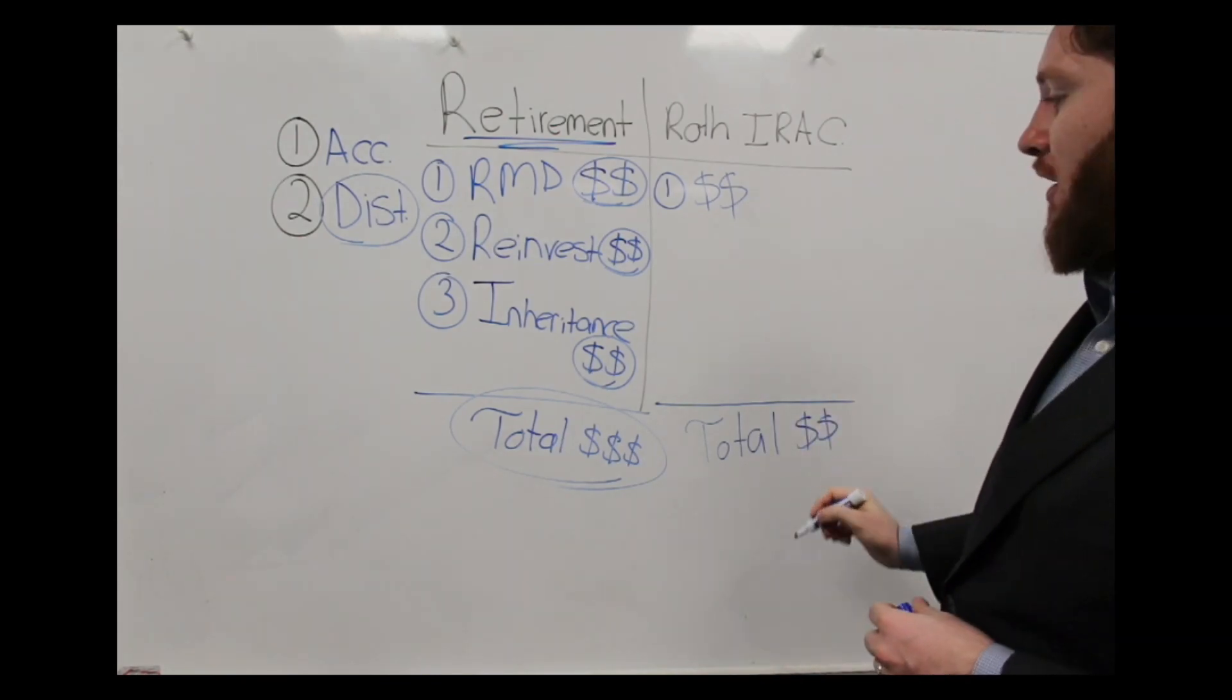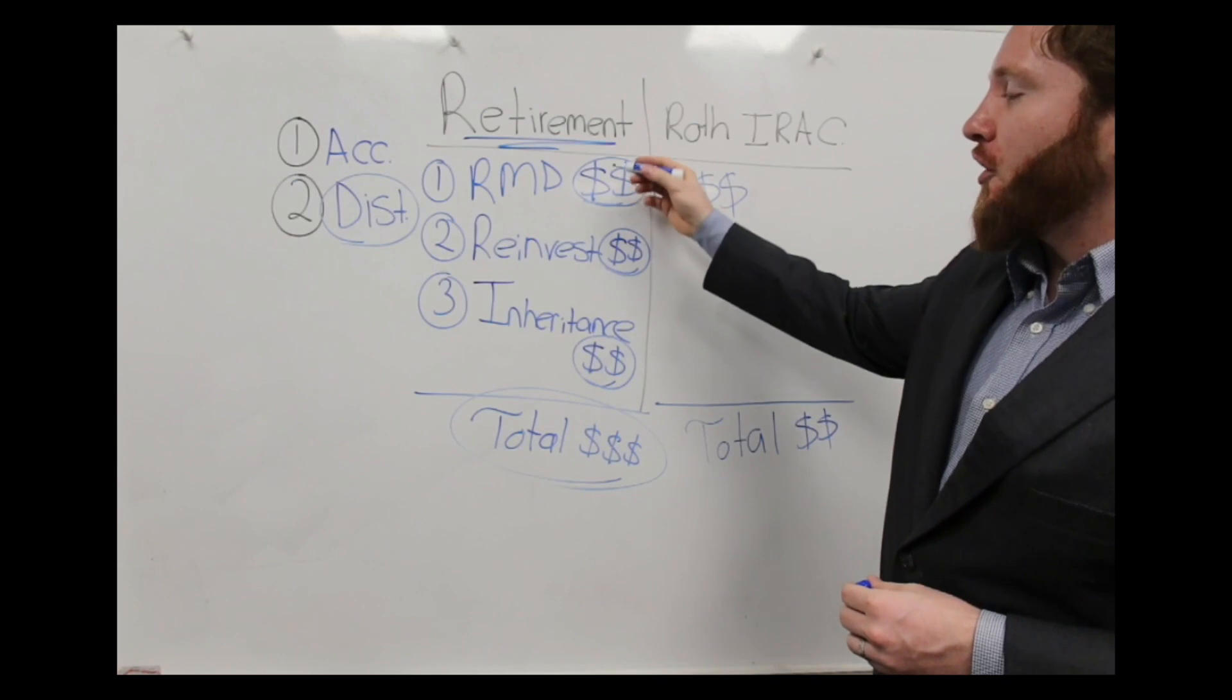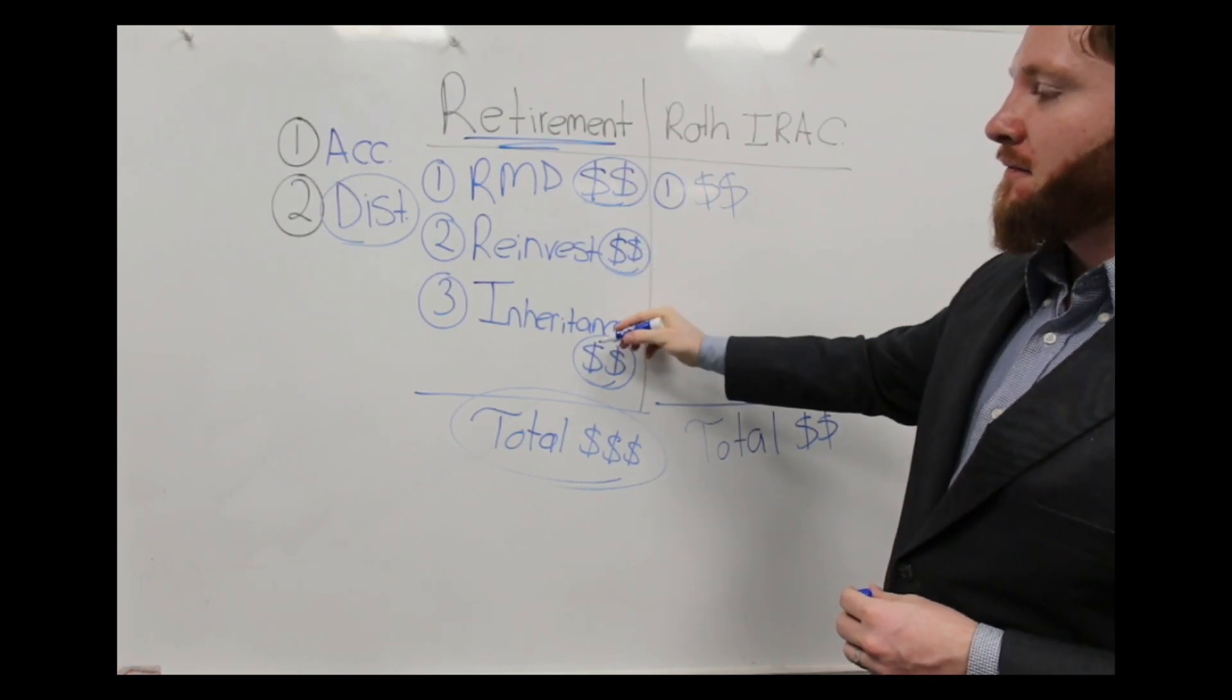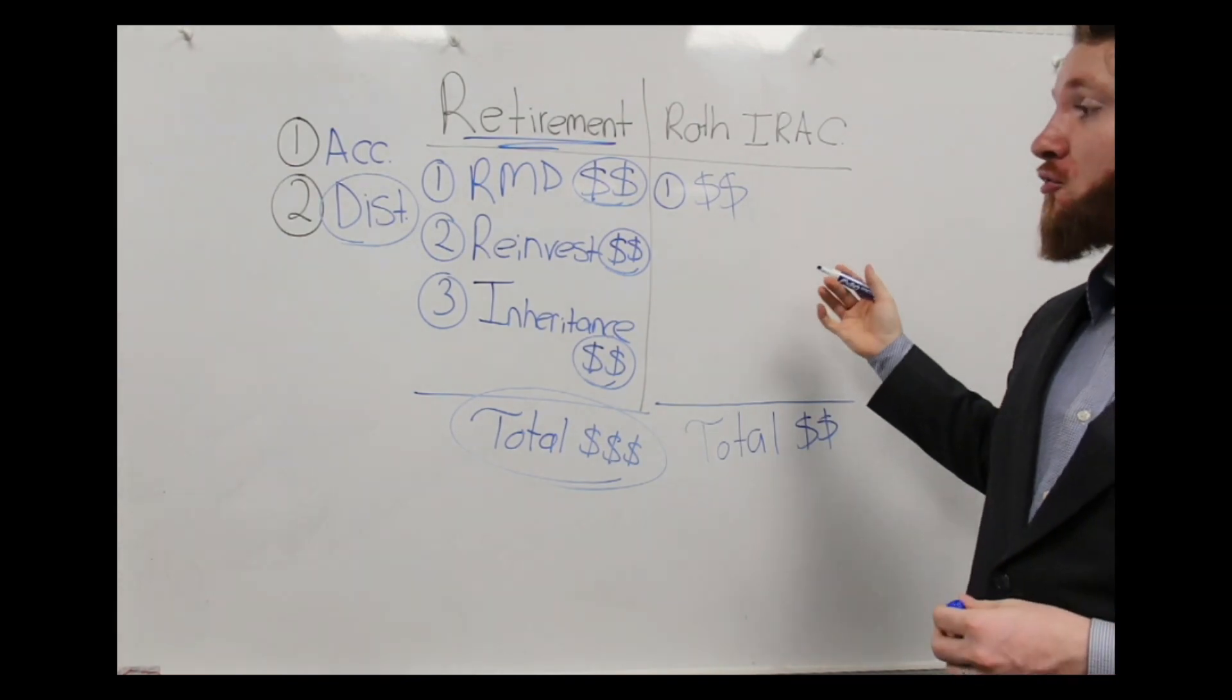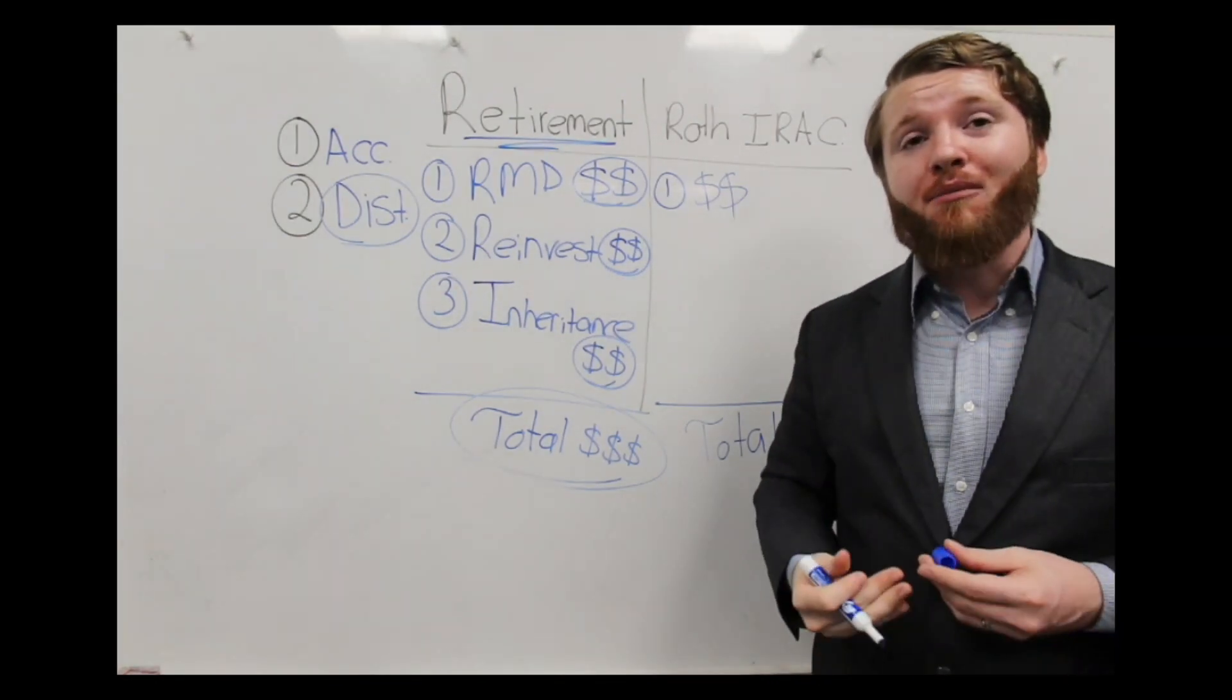And it's simple at this point. If you pay more over here by not doing anything than you pay by doing a Roth IRA conversion, you'd probably do the Roth IRA conversion because you'll save money in tax.